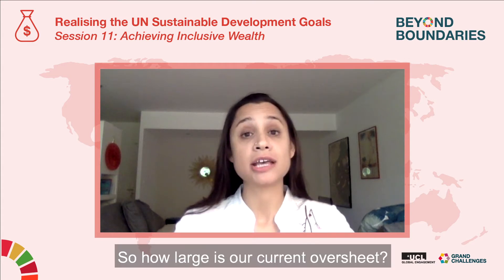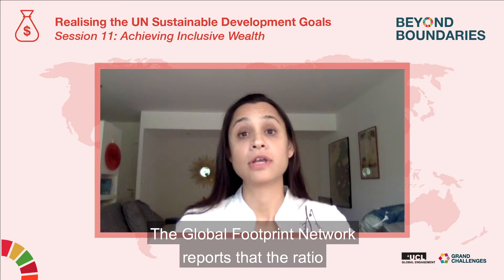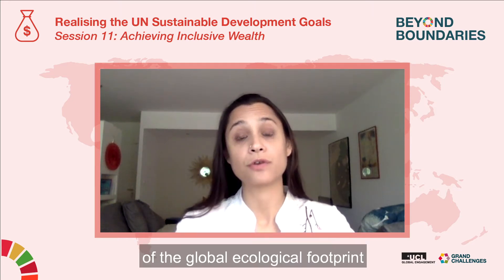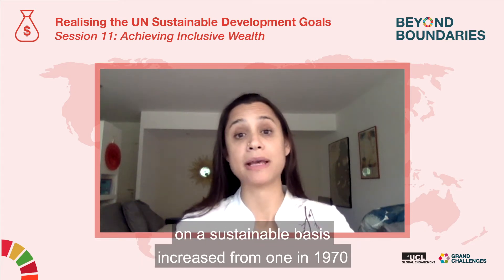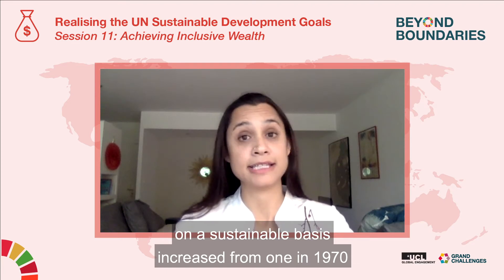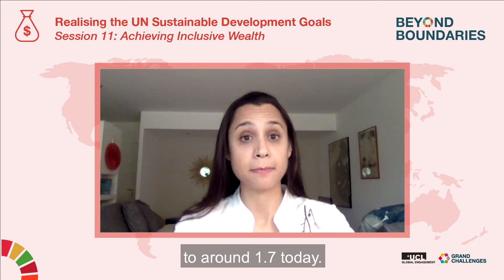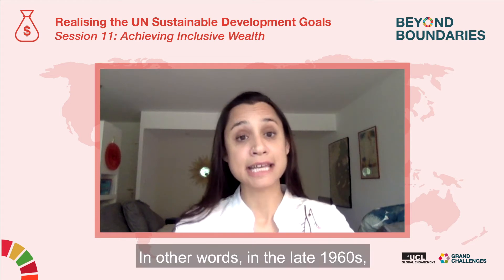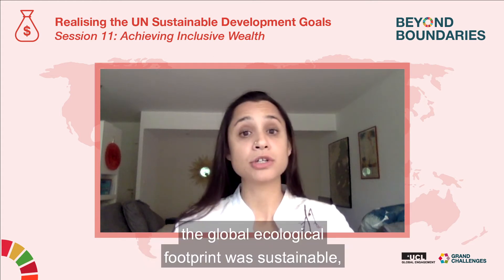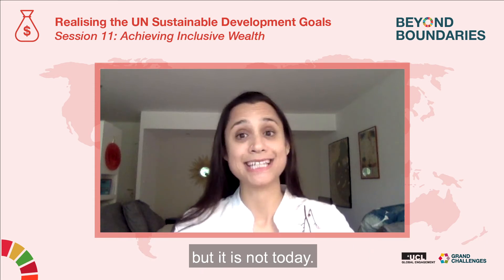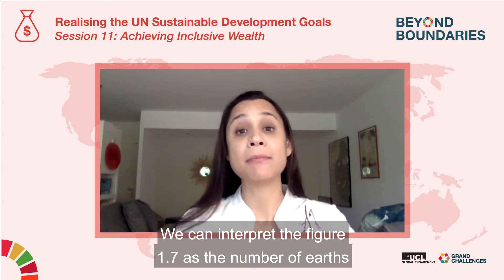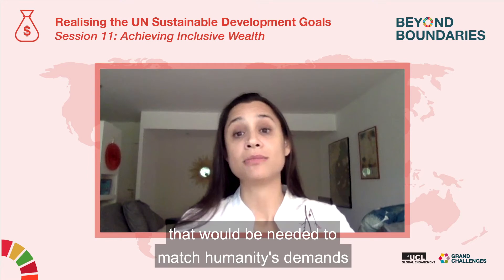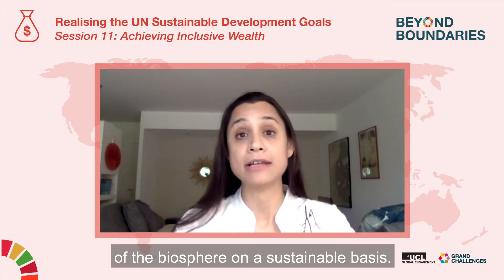So how large is our current overshoot? The Global Footprint Network reports that the ratio of the global ecological footprint to the ability of the biosphere to supply that footprint on a sustainable basis increased from 1 in 1970 to around 1.7 today. In other words, in the late 1960s the global ecological footprint was sustainable, but it is not today. We can interpret the figure 1.7 as the number of Earths that would be needed to match humanity's demands of the biosphere on a sustainable basis.